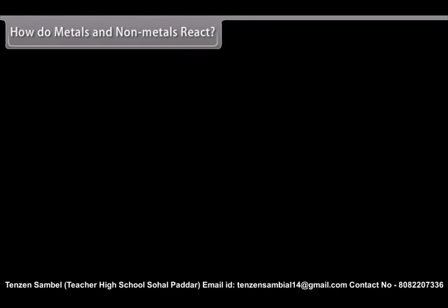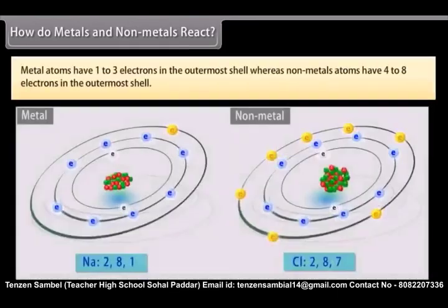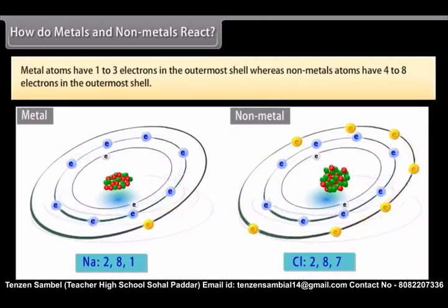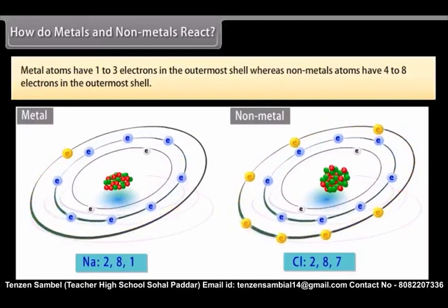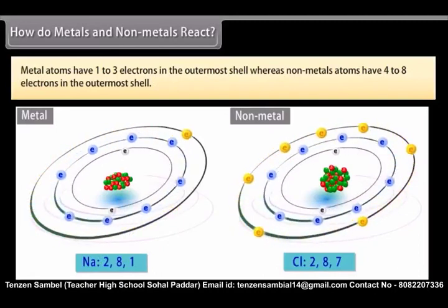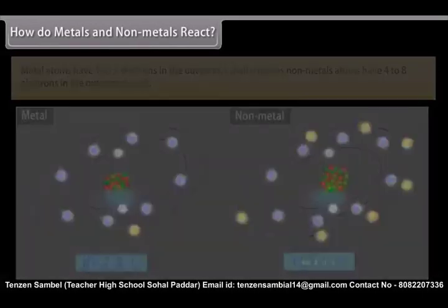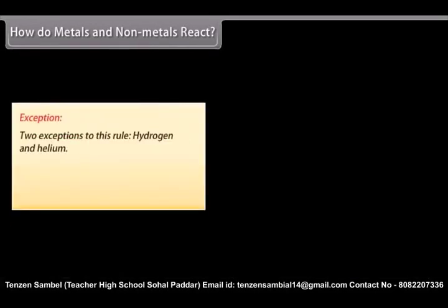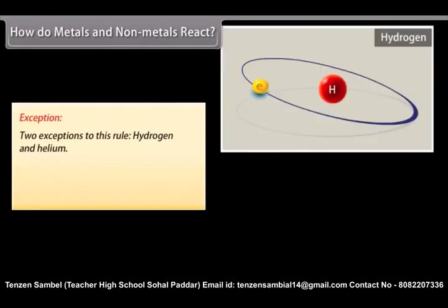How do metals and non-metals react? Metal atoms have 1 to 3 electrons in the outermost shell. Whereas non-metal atoms have 4 to 8 electrons in the outermost shell. Exception. Two exceptions to this rule: hydrogen and helium.